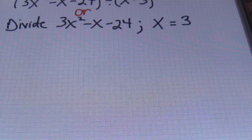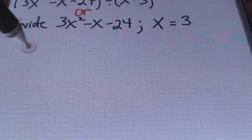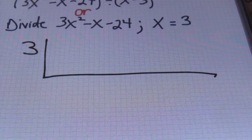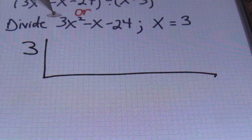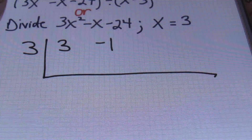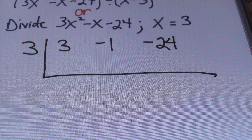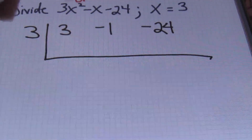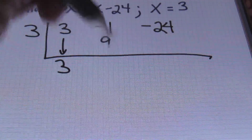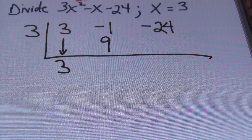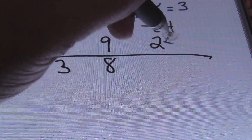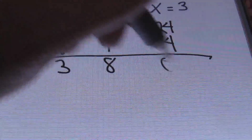Now, it could be written this way, already set up in long division, or you can find this problem written as the quantity of 3x squared minus x minus 24 divided by x minus 3, or they can simply say divide 3x squared minus x minus 24 when x equals to 3. These all mean the same thing, and we're going to set up our synthetic division like so. Since they told us the value of x would equal 3, we'll have 3 on the outside of an upside-down division symbol. Within this division symbol, you'll be placing all of the coefficients from your dividend — 3x squared minus x minus 24. So my first coefficient is 3, the second coefficient is negative 1, and the last coefficient is negative 24.